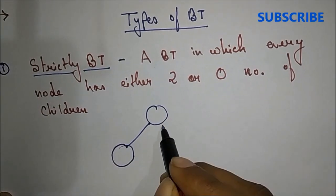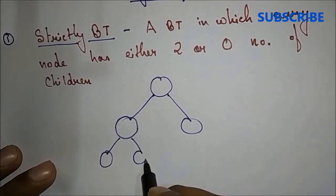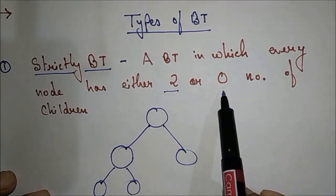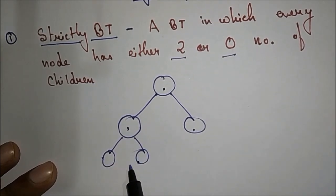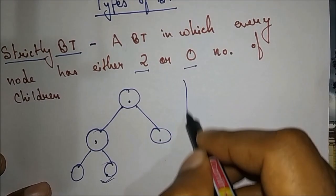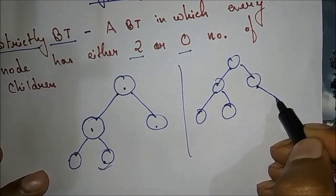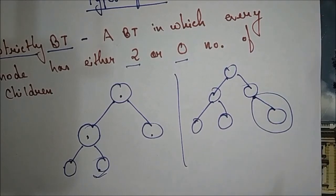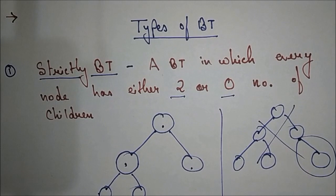For this node we are having two children, and for this node we are again having two children. This is strictly binary because the condition is two or zero. If the tree has a node with only one child, it is not strictly binary, since every node must have zero or two children. We cannot have one child.